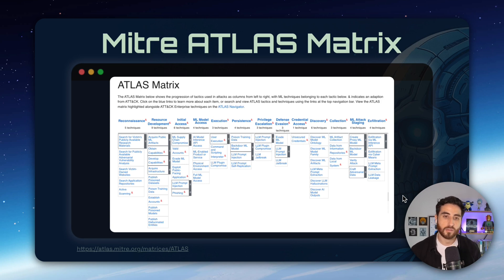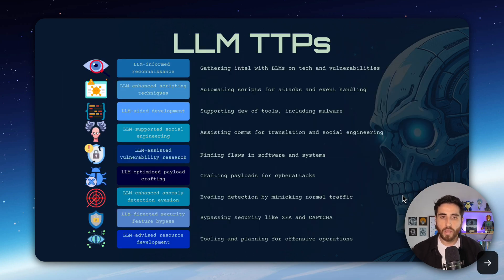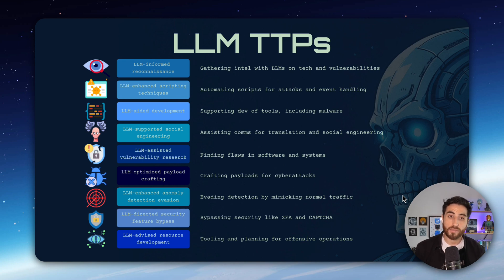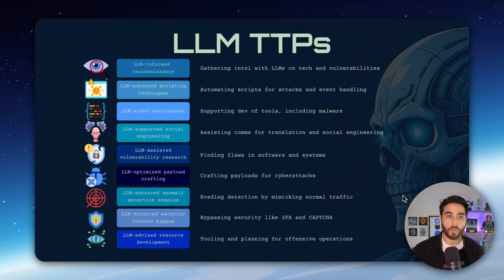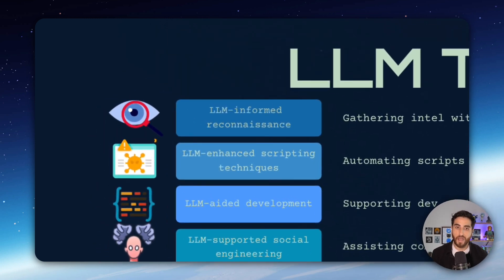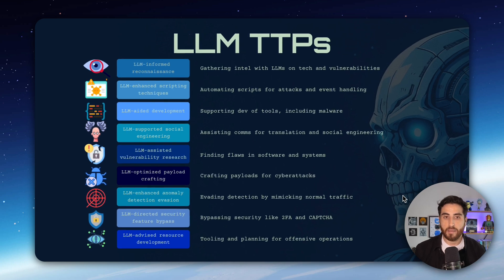ATLAS is a really interesting framework. Even if it's not perfect, it is an early attempt to help you understand how threat actors — or even your own users — are using LLMs for malicious or adversarial goals. This leads us to the next one: LLM TTPs, which is a kind of extension to the MITRE ATLAS matrix. This one was created by Microsoft and OpenAI when they released a report in 2024 documenting threat actors using OpenAI models for malicious or adversarial purposes. Some of the classifications here are really interesting, including LLM-informed reconnaissance — how threat actors leverage LLM models to gather intelligence or find vulnerabilities.